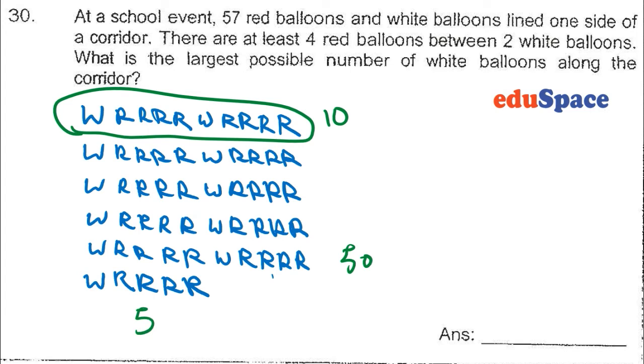The question is, what is the largest possible number of white balloons? We are left with two more balloons. We can put in one more red and one more white. So there will be a total of 12 white balloons.